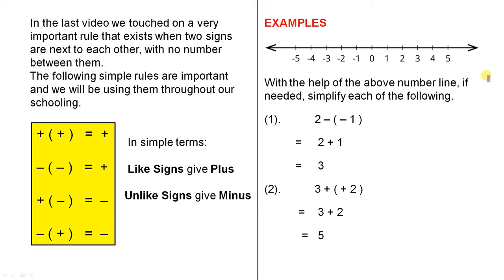Let's have a look at some examples. Here I've drawn a number line, and we've shown the numbers in both directions. Remember from our previous work, all the numbers on this side are negative and they keep extending, and the numbers on this side are positive and they also keep extending. With the help of the above number line, if needed, simplify each of the following.